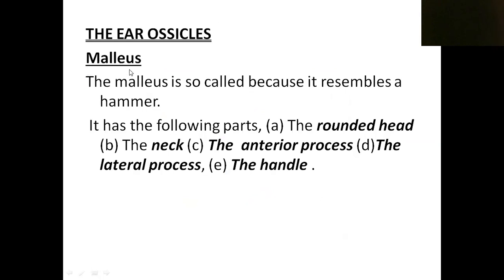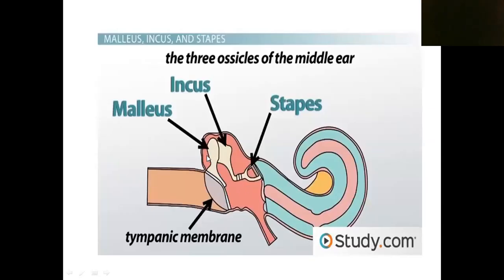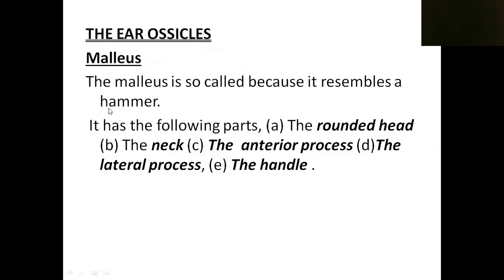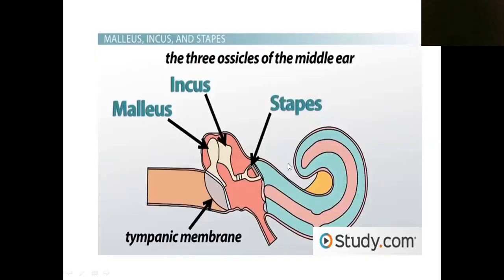First ossicle: the malleus. The malleus resembles a hammer. It has one rounded head, a neck, an anterior process, a lateral process, and a handle. Here we can see one rounded head, then the neck, then the handle. The lateral process is visible, though the anterior process is not shown in this image.